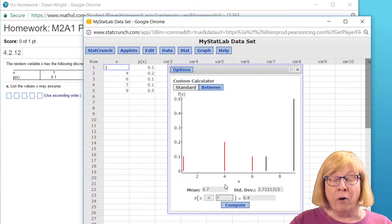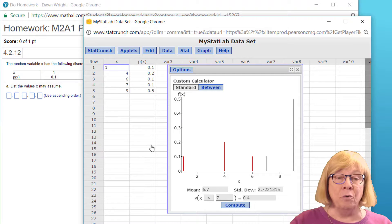So very, very quick way to do these discrete probability distribution problems in which you have a unique distribution. You can use the custom calculator in StatCrunch to do it. Hope this helps.